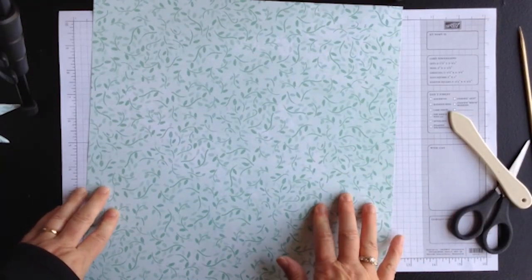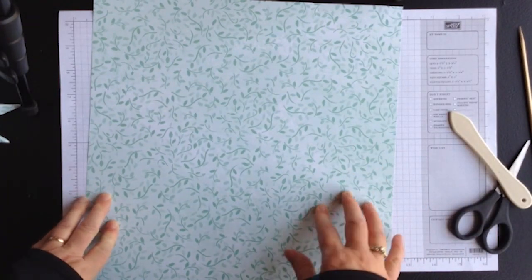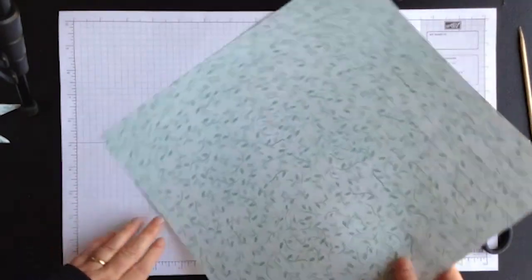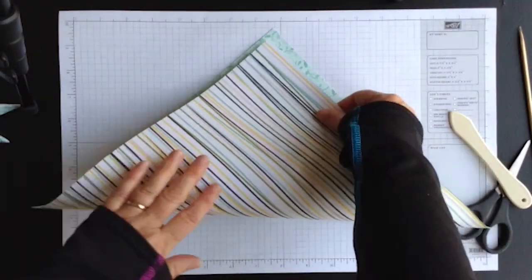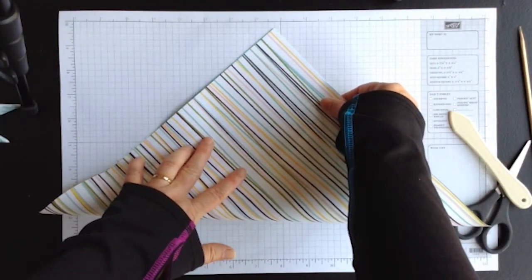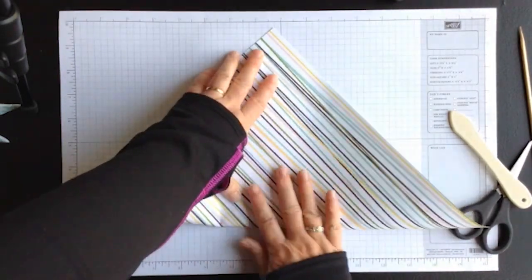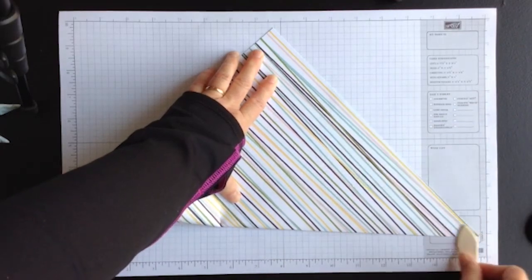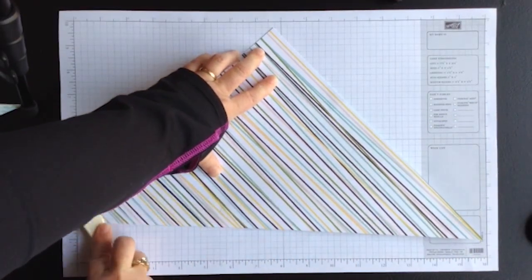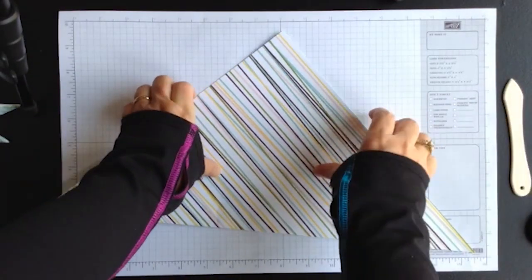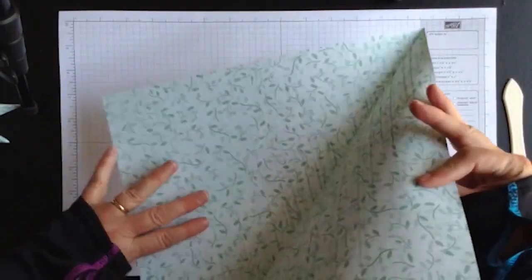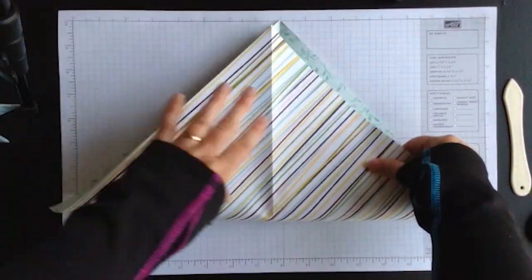Choose the side of the paper that you would like to be on the outside of your Christmas tree and fold the paper in half diagonally. Open it and fold it on the opposite diagonal.